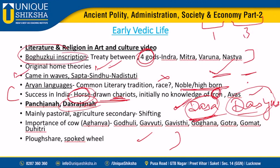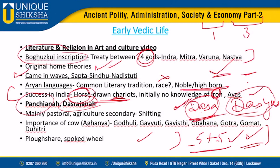Later, when iron started to be used by the later Vedic people, it was known as Krishna Ayas or Shyama Ayas. There is mention of the Pancha Jana as well as the Dasarajna battle - the Battle of Ten Kings - in which ten tribes got together under a sage and fought against the Sudas, supported by Vashistha. There is also another battle in which Divodasa of the Bharata clan defeated the local chief Shambara.